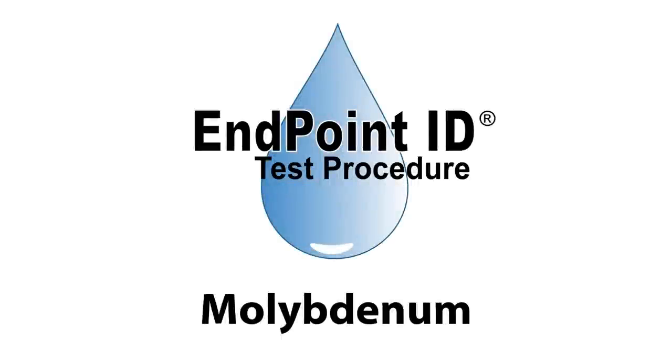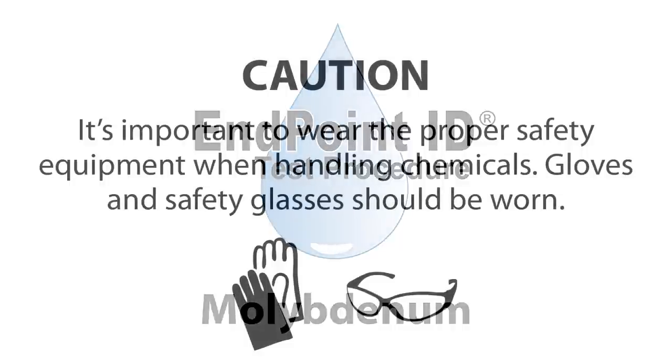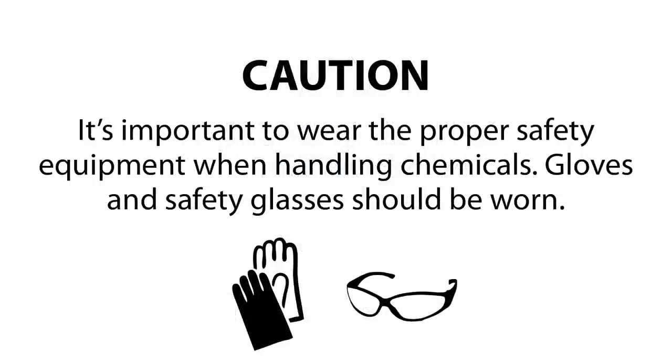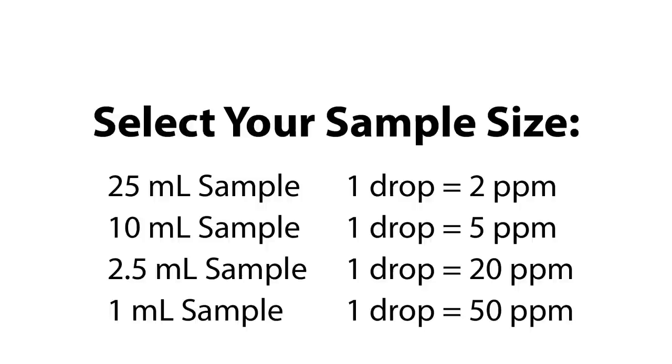This is a demonstration of a molybdenum drop count test kit using endpoint ID procedures. The first step according to the endpoint ID procedure is to select the appropriate sample size. You want to select a sample size that matches the equivalency you would like to use.